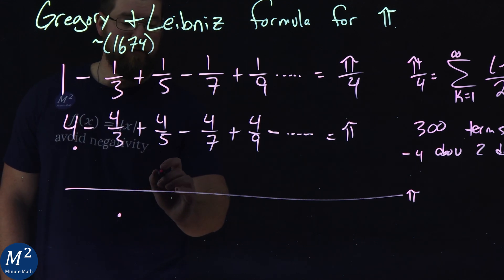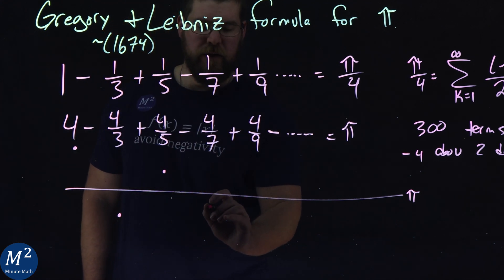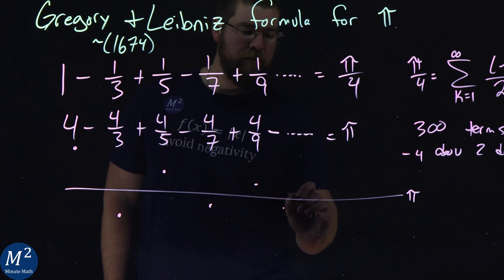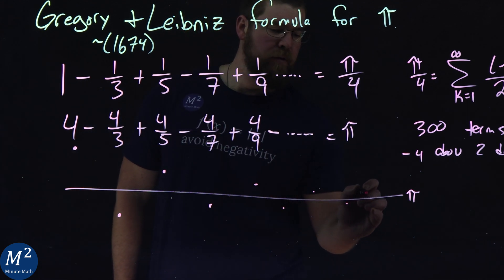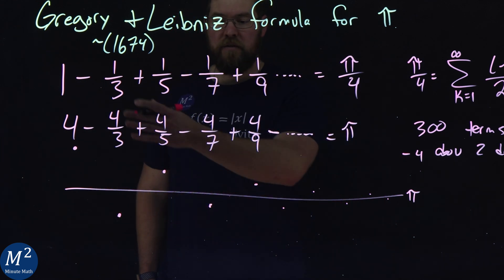Then we add a 4/5, the value comes up here. Subtract the 4/7, comes down here. Add 4/9, it goes here. And we keep going back and forth, back and forth. And it keeps going above and below what the value of pi is and gets closer and closer.